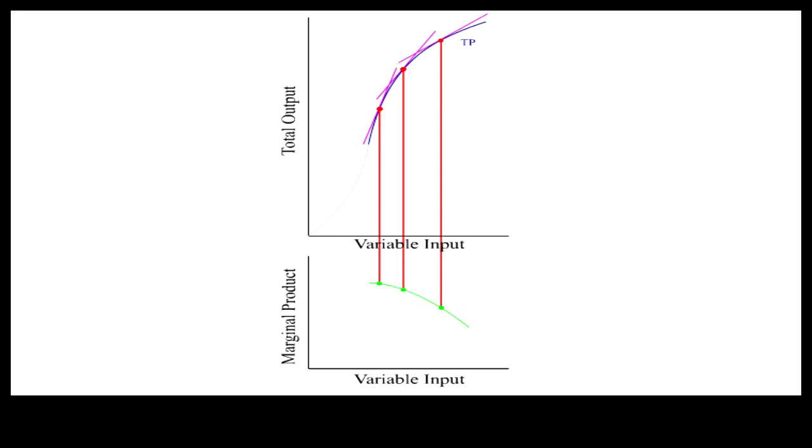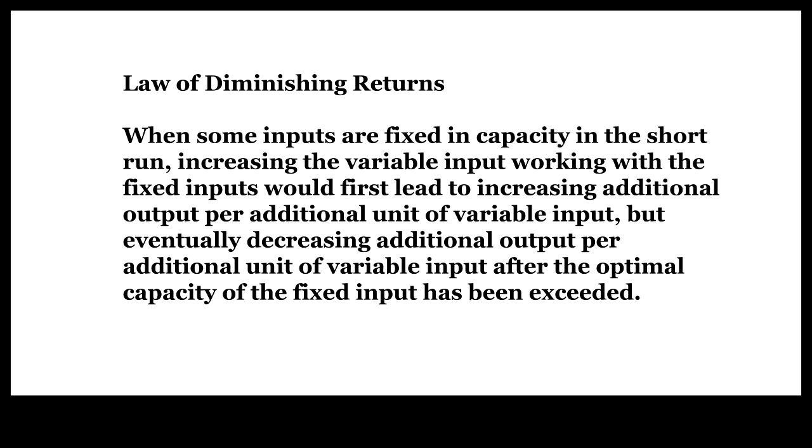Thus, an S-shape TP produces an inverted U-shape MP with increasing returns followed by decreasing returns. This phenomenon of decreasing marginal product following increasing marginal product when an increasing amount of variable input is combined with some fixed input in the short run is known as the law of diminishing returns.